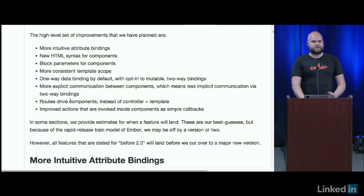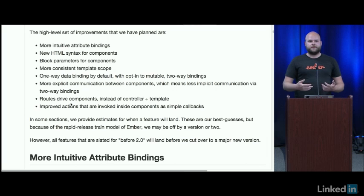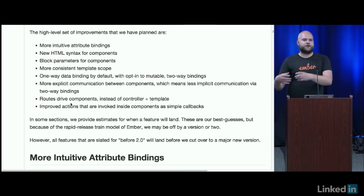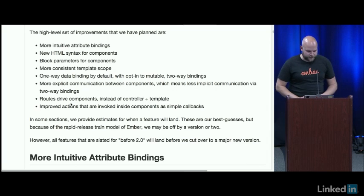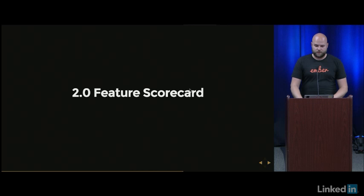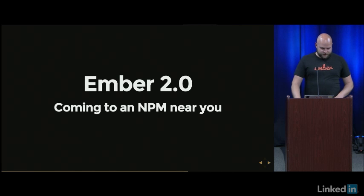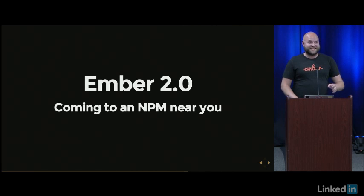More explicit communication, meaning less implicit communication via two-way bindings — this is basically 'data down, actions up' — that's also part of the 1.13 story with Glimmer. Route-driven components instead of controllers and templates is part of 1.13. Routable components and improved actions: basically we're going to pass actions as data, but instead of the data being a string, it's going to be a bound function that you can call and pass around to other components for composability.